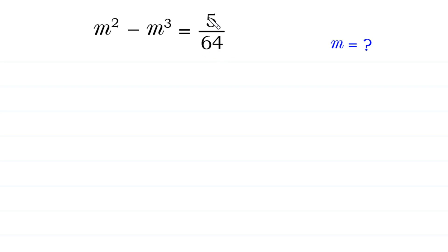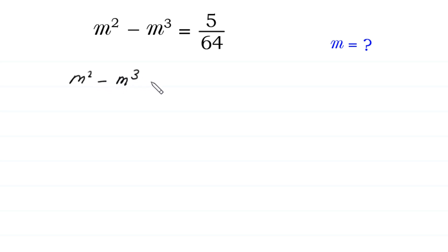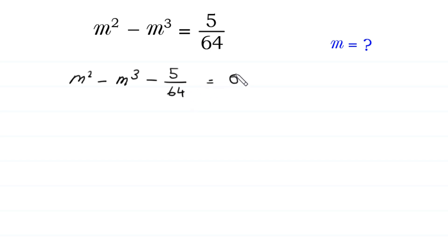First of all, we move this 5 over 64 to the left side. So m squared minus m cubed, this positive 5 over 64 becomes negative 5 over 64 at the left side, is equal to 0.